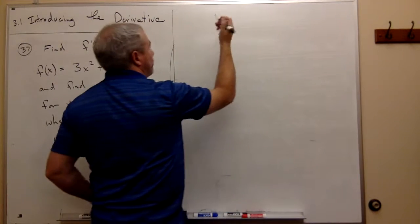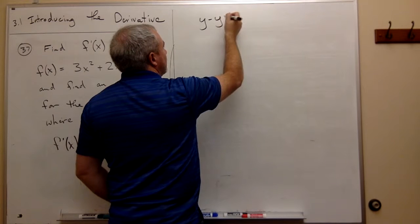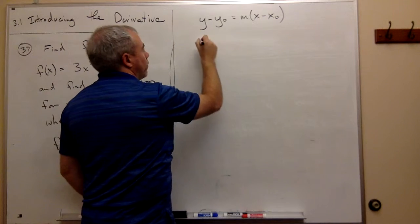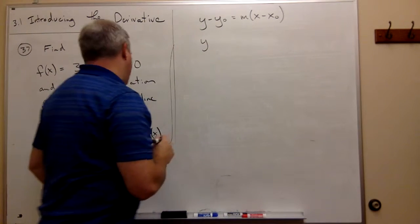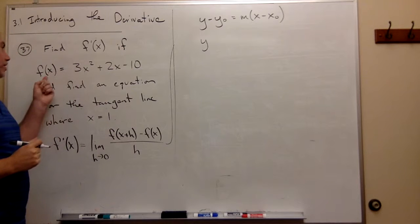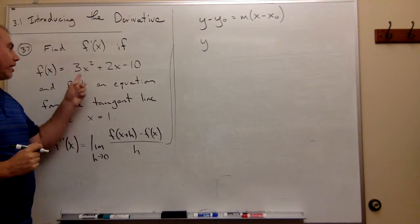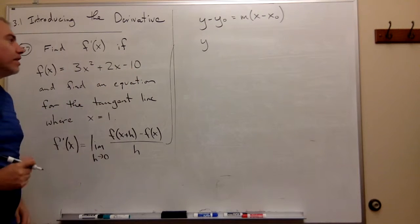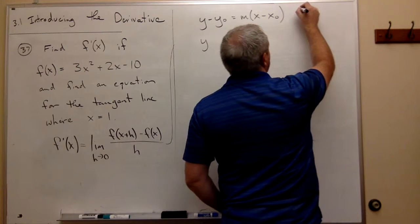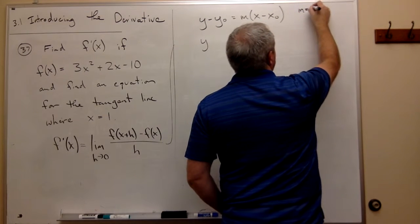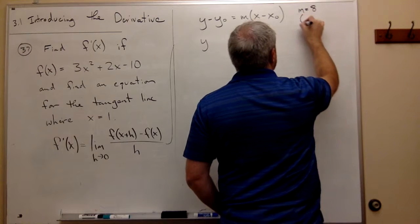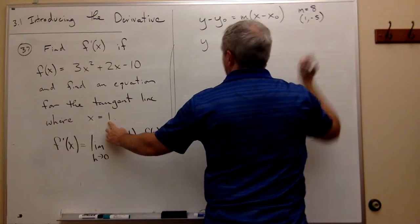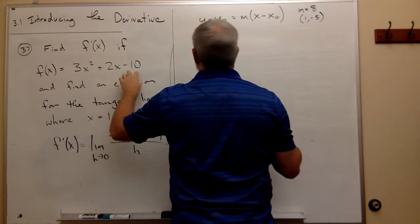I'm going to use my point-slope equation: y - y₀ = m(x - x₀). Now what's my point? If x is 1, then what is y? If x is 1, I get 3 + 2, which is 5, minus 10 is -5. So the point I'm dealing with, the slope was 8, and the point is (1, -5). I just plugged 1 into the function to get -5.